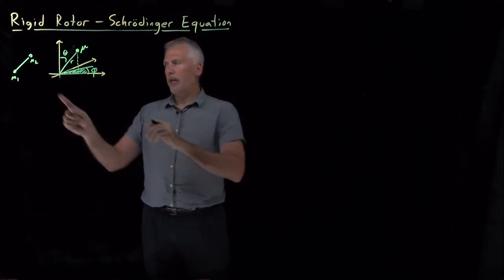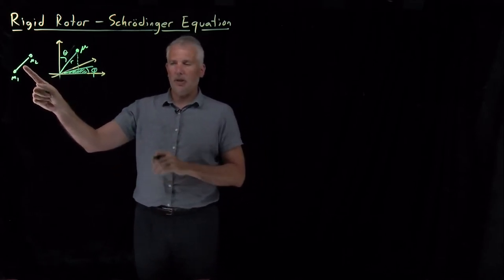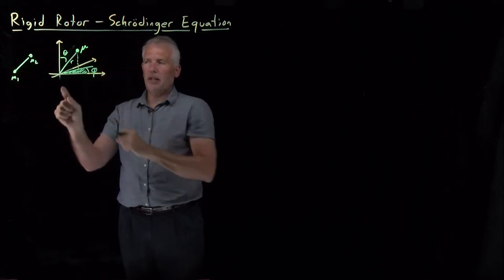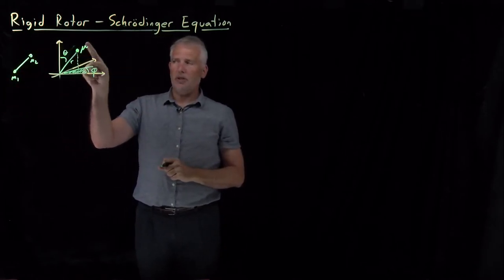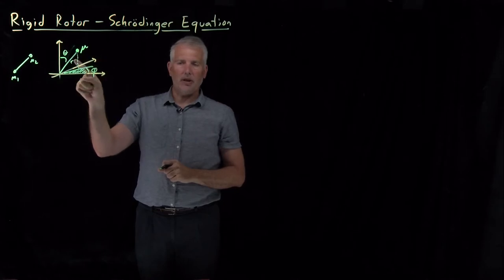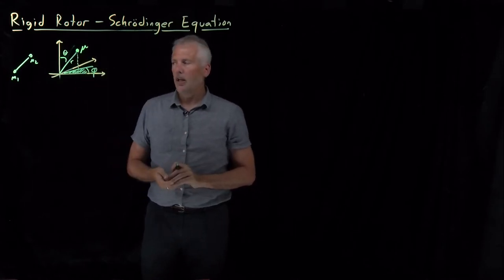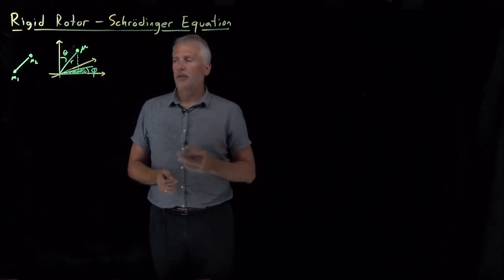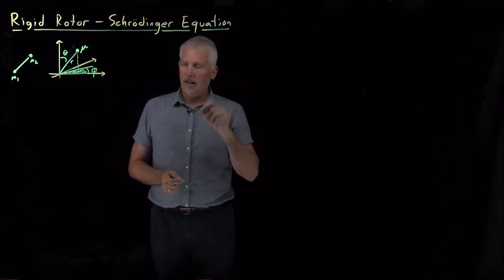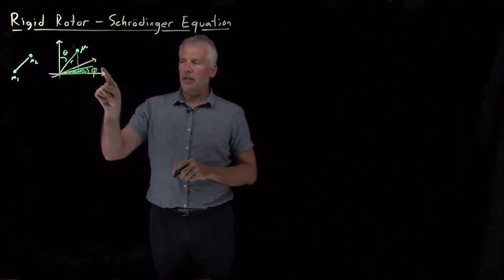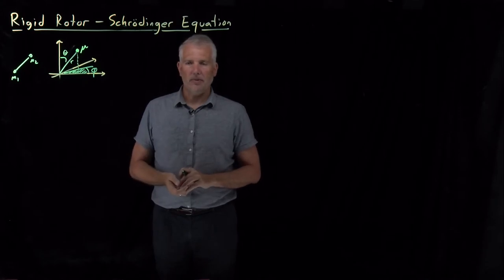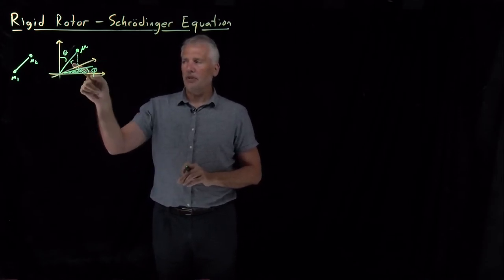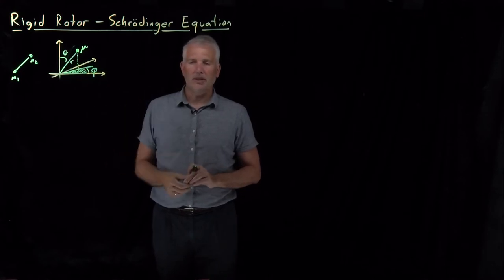When the molecule vibrates, keeping its center of mass fixed and changing its bond length, that corresponds in this model to changing the length of coordinate r. On the other hand, if the molecule rotates and changes its orientational angle, that's a change in theta or phi or both. Rotations are described by theta and phi; vibrations are described by changes in r.